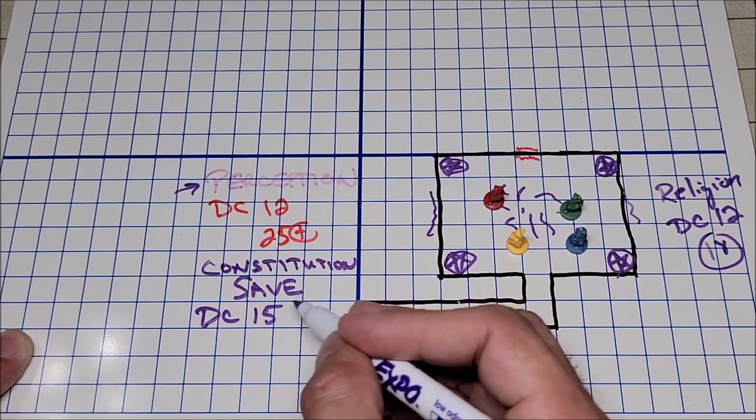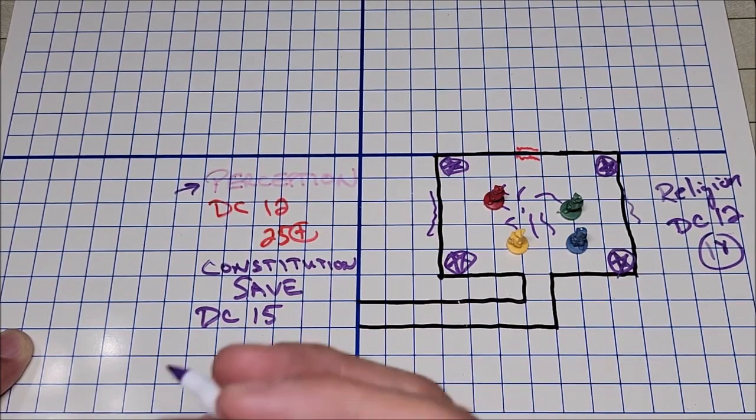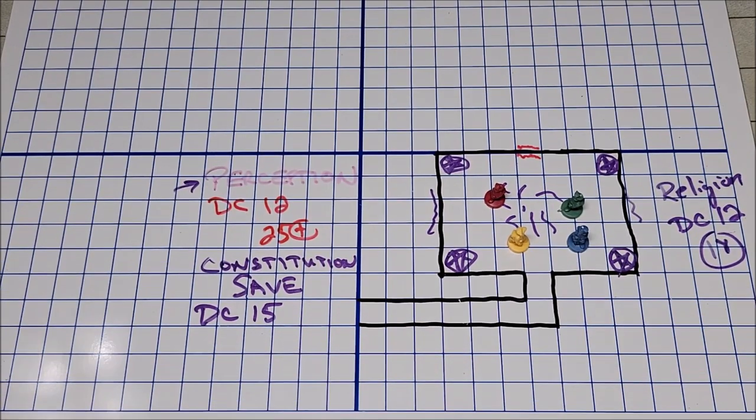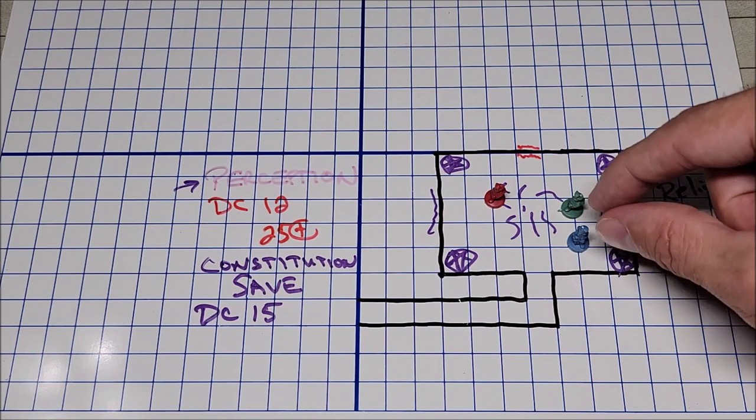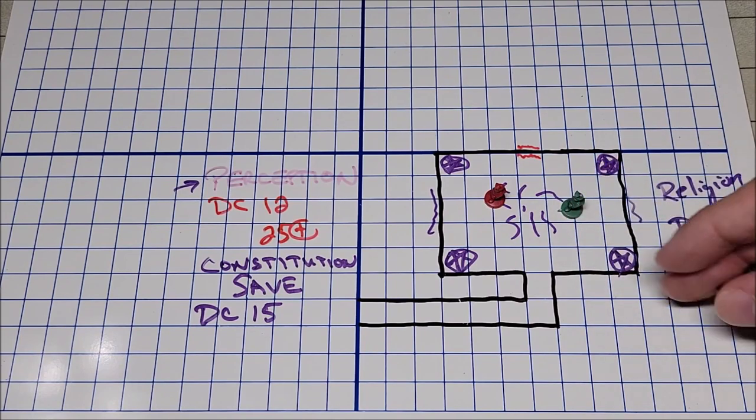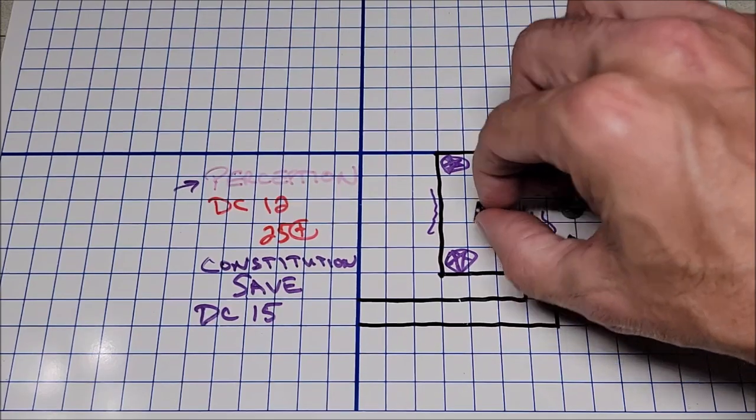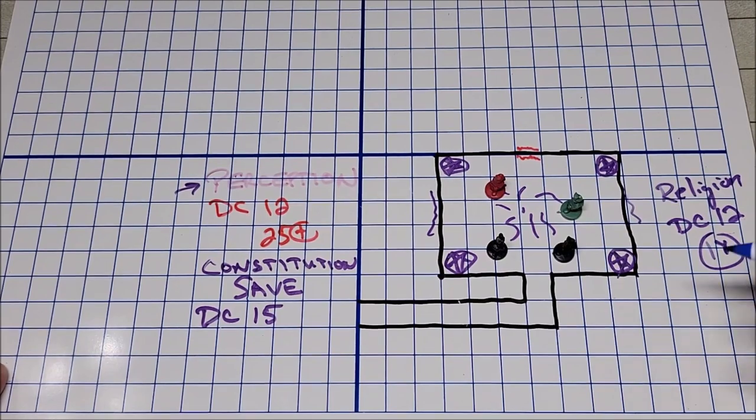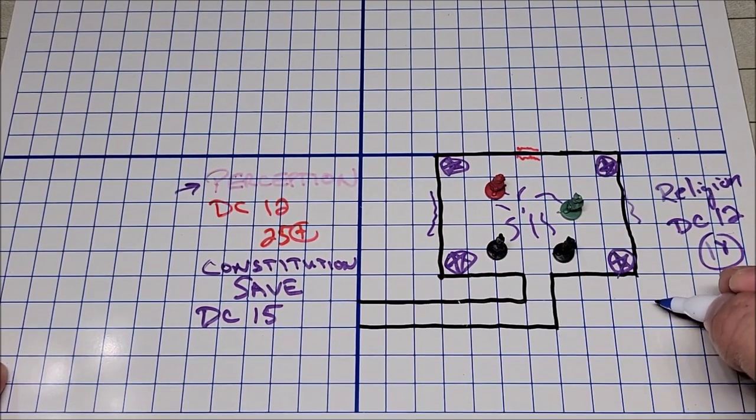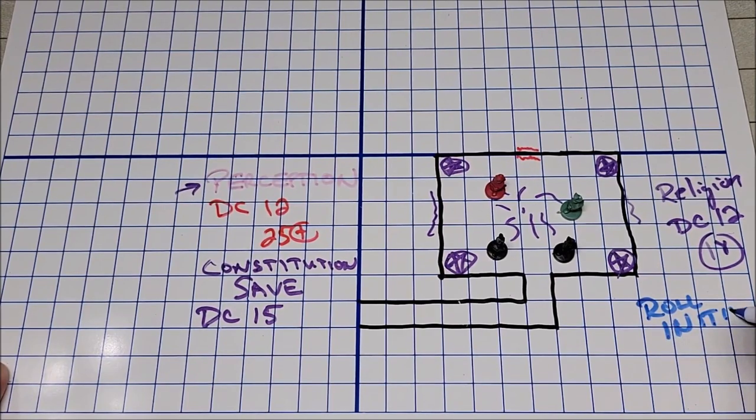Any of our characters that fail this constitution saving throw is going to be poisoned and they're going to begin hallucinating. For the demonstration purposes of this puzzle we're going to remove our yellow character and our blue character and we're going to replace those with two black tokens, and these are going to signify the characters that failed the saving throw. Now we're going to have a lot going on so I would highly encourage the DM to ask for an initiative roll. That way we can keep track of everything and everyone can do what they need to do on their turn.